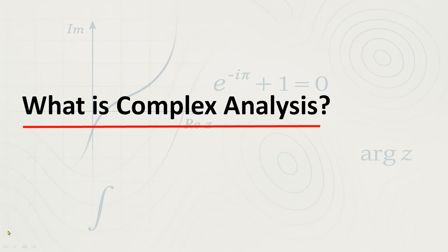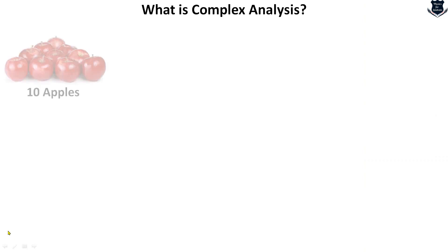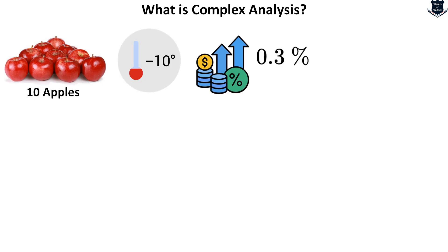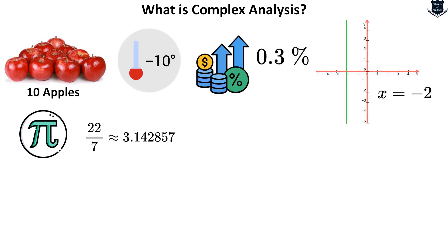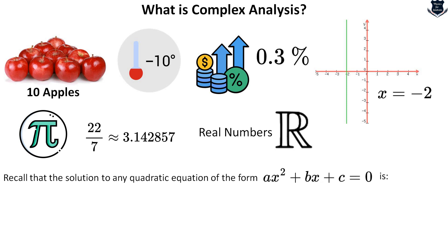So what is complex analysis? In our daily and everyday life, the number systems we encounter are things like 10 apples, the temperature falling to minus 10 degrees, the stock market rising 0.3%, or coordinates where x equals minus 2, or even the elusive pi which is 22 by 7. These are denoted by the real number R, but that is not always the case.